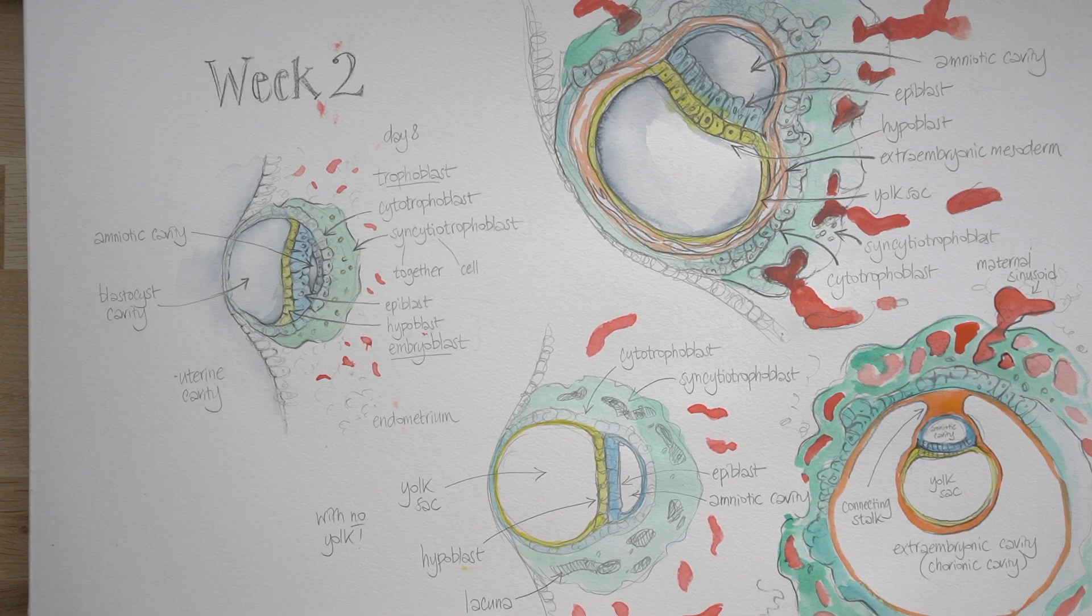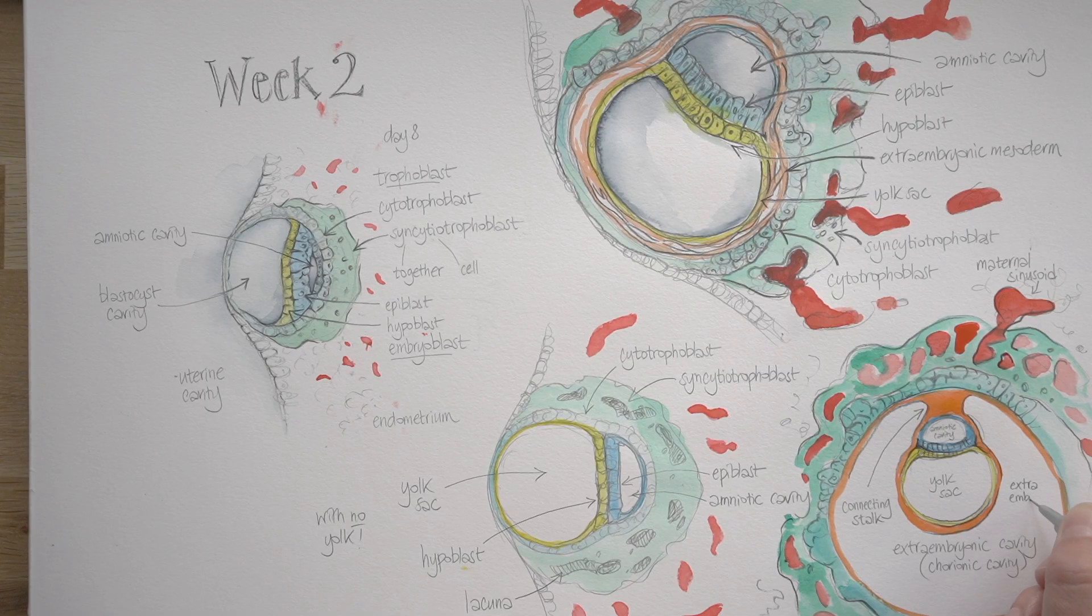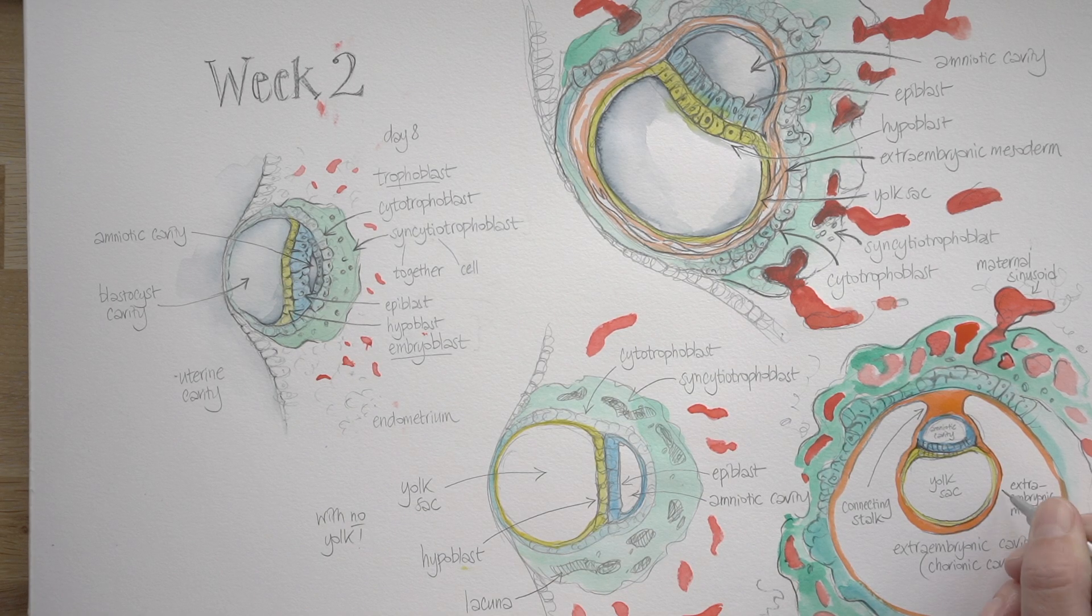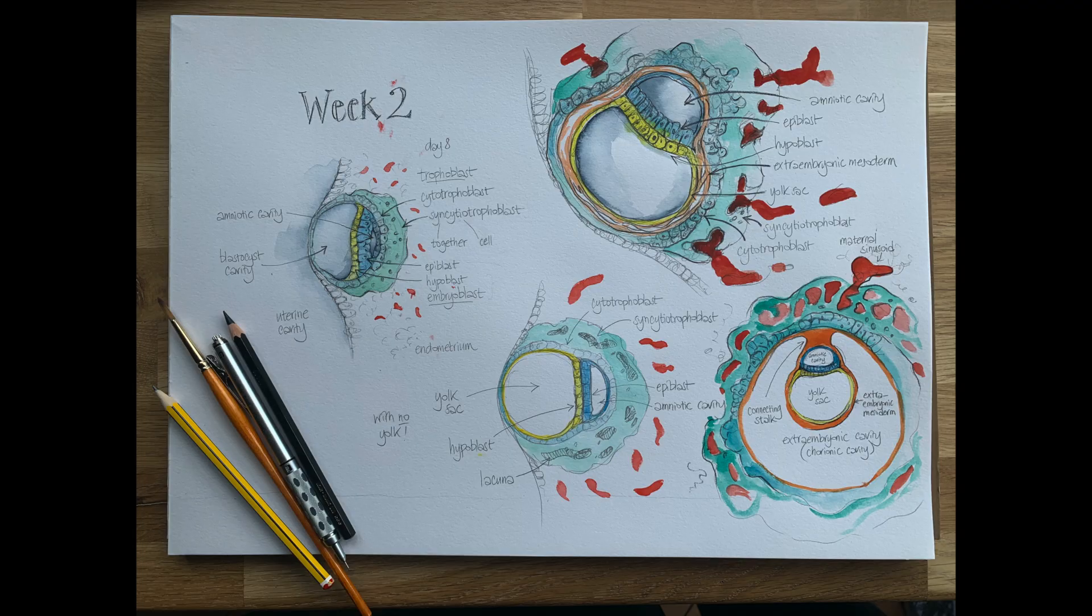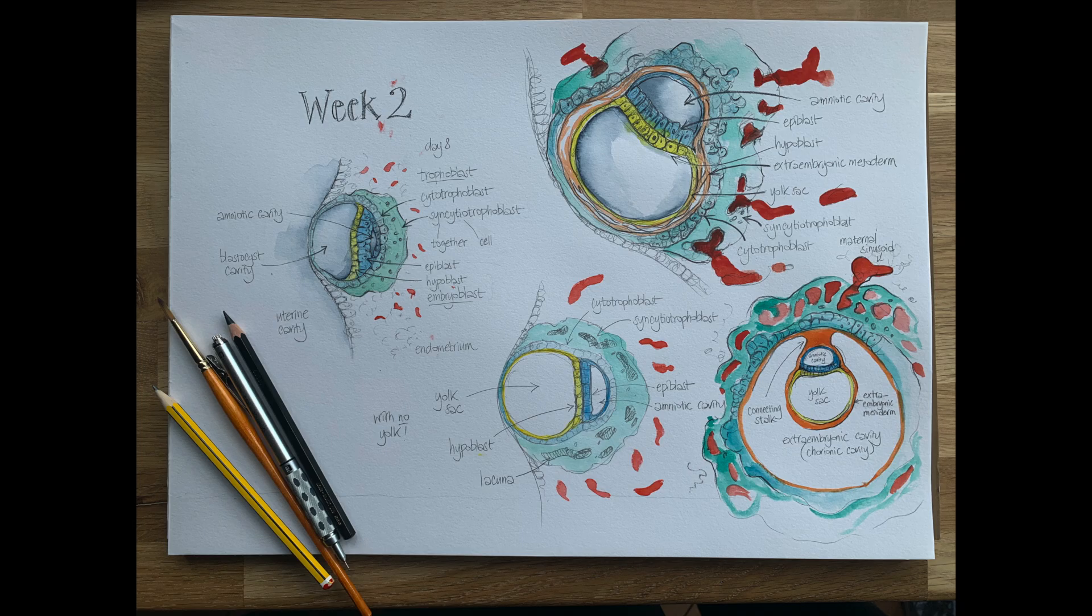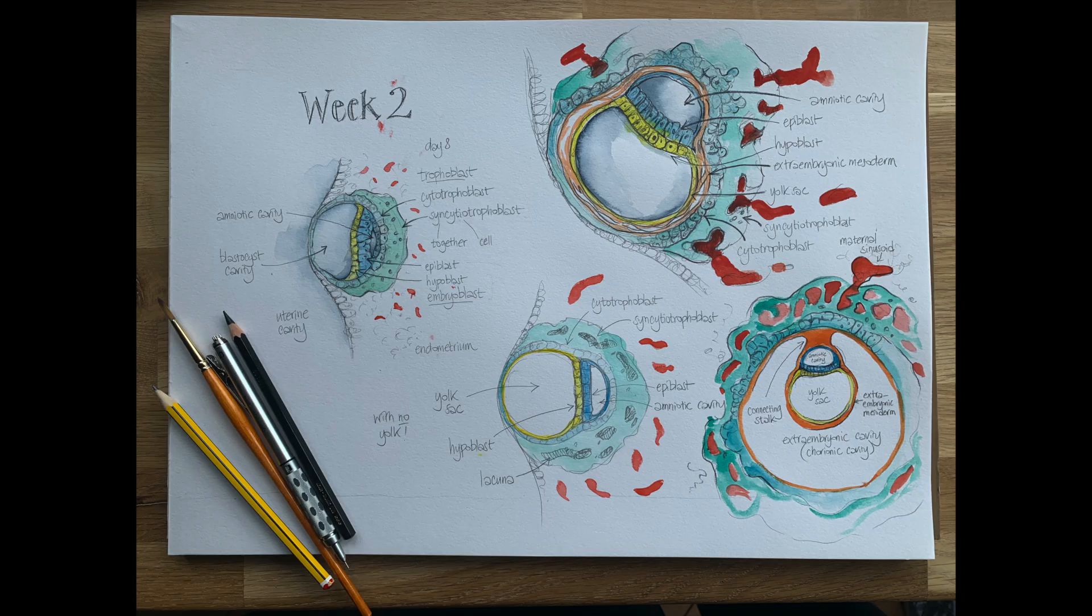So you can see that that mesoderm has ended up lining the whole of the outside of the epiblast and hypoblast and the associated amniotic cavity and yolk sac. And then it's lining the inner surface of the cytotrophoblast as well, but then also connecting that embryo with its cavities to the early placenta via a connecting stalk. And that connecting stalk of extraembryonic mesoderm, that is the precursor of the umbilical cord. So that's what you looked like at the end of the second week of development.